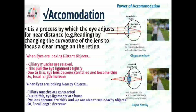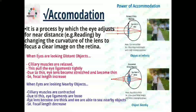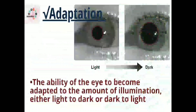Next we have accommodation. As the name suggests, it is the process by which the eye adjusts for near distance — for example, reading — by changing the curvature of the lens to focus a clear image on the retina. Two important points: first, when eyes are looking at distant objects, ciliary muscles are relaxed, pulling the eye ligaments tightly, causing the lens to become stretched and thin, increasing focal length. Second, when eyes are looking at nearby objects, ciliary muscles contract, the ligaments become loose, and the lens becomes thick, decreasing focal length.